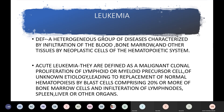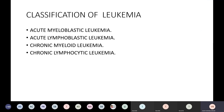Blast cells can also be found in the lymph nodes, spleen, liver, or other organs of the body. Classification of leukemia includes: acute myeloid leukemia, acute lymphoblastic leukemia, chronic myeloid leukemia, and chronic lymphocytic leukemia.